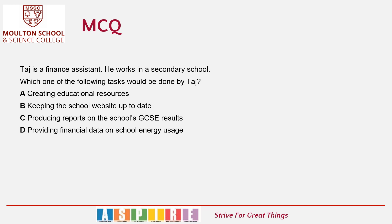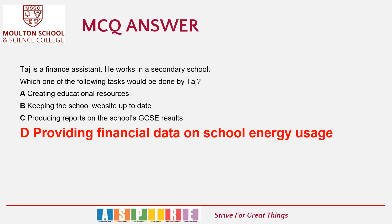So the first question: Taj is a finance assistant. He works in a secondary school. Which of the following tasks would be done by Taj? A: Creating educational resources. B: Keeping the school website up to date. C: Producing reports on the school's GCSE results. Or D: Providing financial data on the school's energy usage. The answer is D — the main task of someone working as a finance assistant in a school would be to provide financial data. In reality they may work on lots of other things, but the question is about finance so you need to select the finance answer.